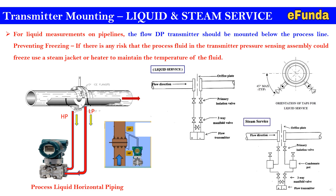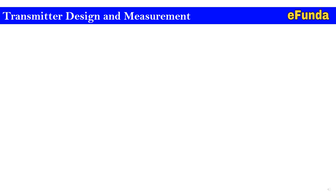For steam service, a similar type of hookup is used as per liquid service. The only difference is that condensation pots will be added at the same level where the tappings are connected. This ensures that condensates settle into the condensate pot, and the impulse line will always remain pressurized so as to have accurate steam measurement.